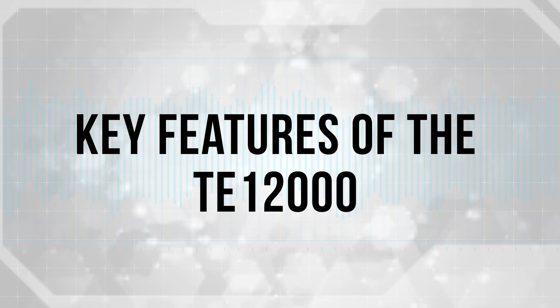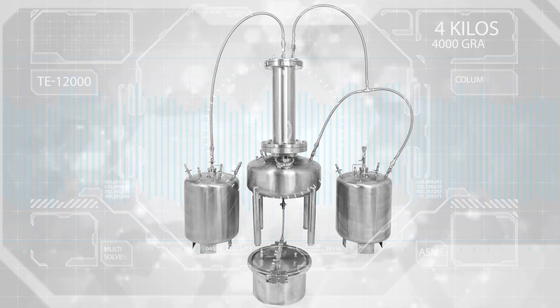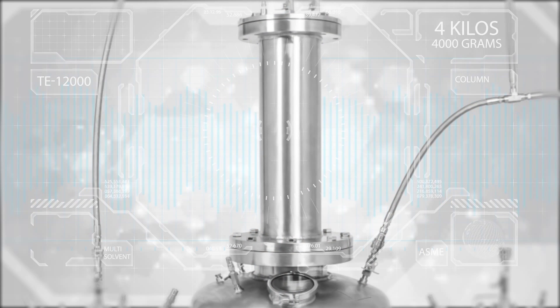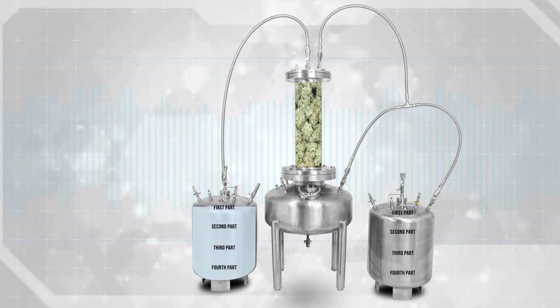Key features of the TE12000 extractor. This TE12000 titanium extractor can hold 4 kilos of plant material and extract as fast as 5 minutes using a temperature range from as low or high as your supplied chiller heater can go. Common temperature range, negative 40 Fahrenheit to 120 Fahrenheit.